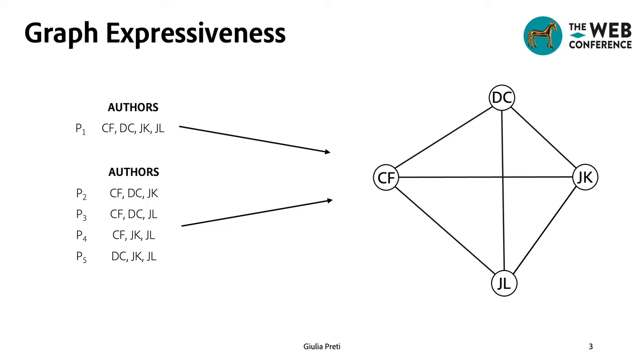As an example, the article P1 written by four authors will be represented in the same way as the group of four articles below which are written by subset of the same set of four authors.